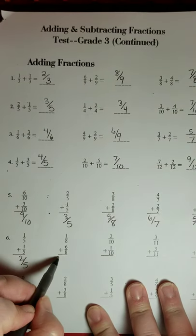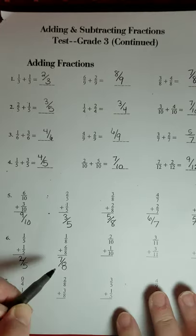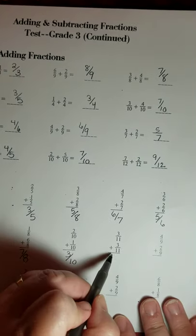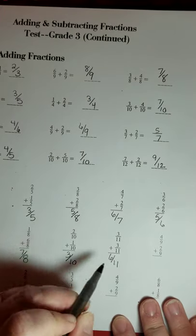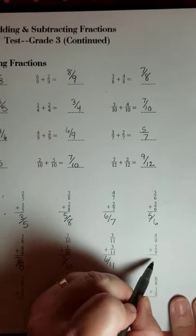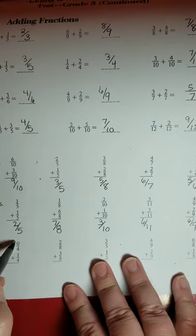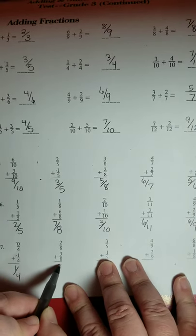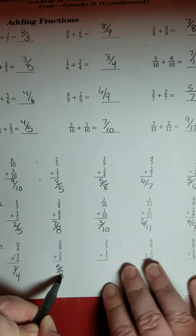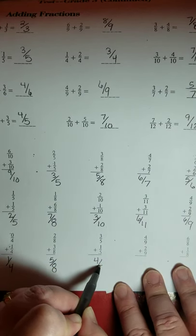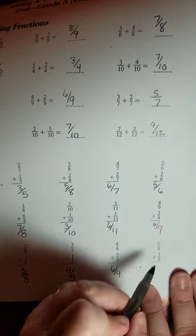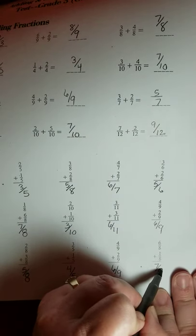1 and 6 would be 7 eighths. 3 tenths. 3 tenths. 6 elevenths. 6 ninths. 0 plus 1 is just 1, 1 fourth. 5 eighths. 4 fifths. 6 ninths. And 7 eighths.